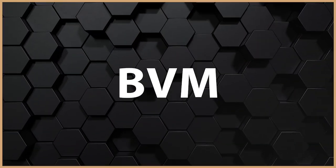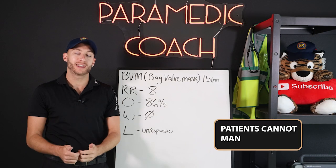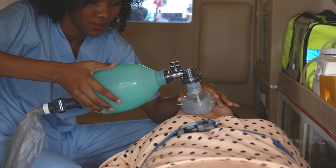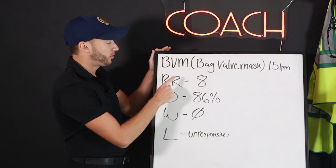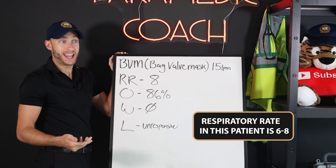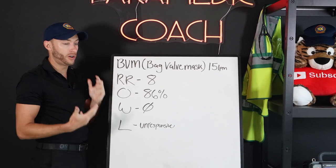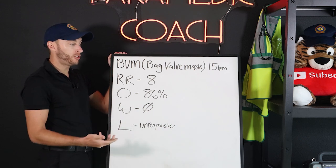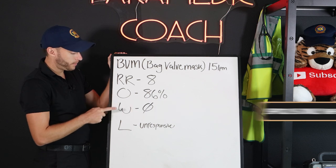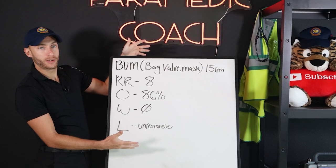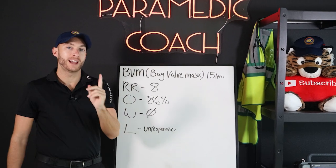With a BVM, your patient is unresponsive. They're unable to speak and cannot manage their own airway. The BVM — bag valve mask — delivers about 15 liters per minute. Respiratory rate might be as low as six to eight. They're unable to get enough ventilations to sustain their life and need assistance with ventilations. Low SpO2, unresponsive, unable to speak — this patient is in respiratory failure.